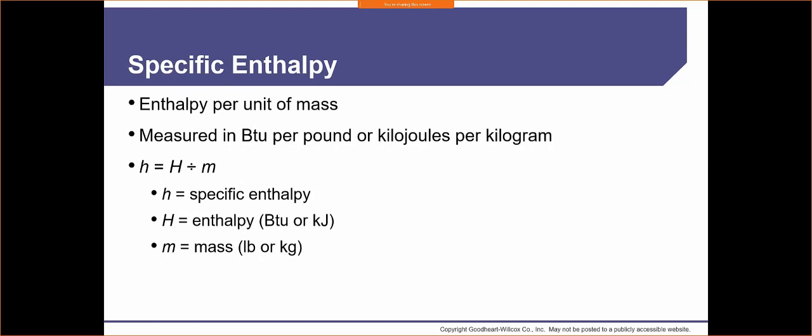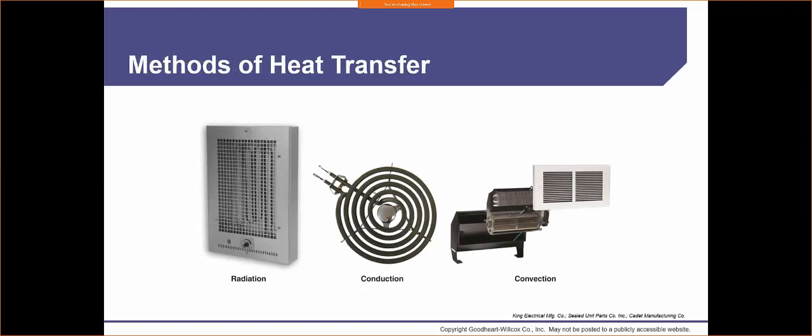Specific enthalpy is enthalpy per unit of mass, measured in BTUs per pound or kilojoules per kilogram. The formula is: Specific Enthalpy = Enthalpy (BTUs) ÷ mass. We also have three different types of heat transfer: radiation, conduction, and convection — illustrated here with a space heater, a stovetop, and a blower wheel circulating air.